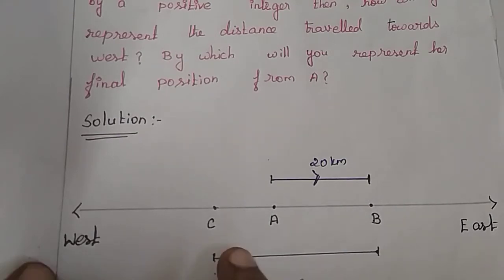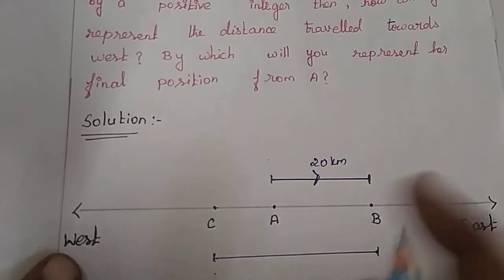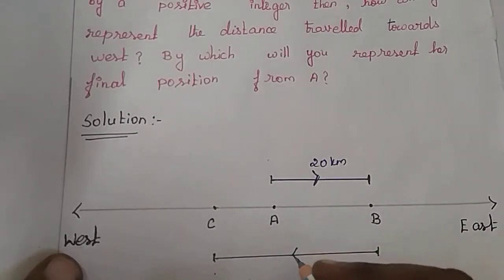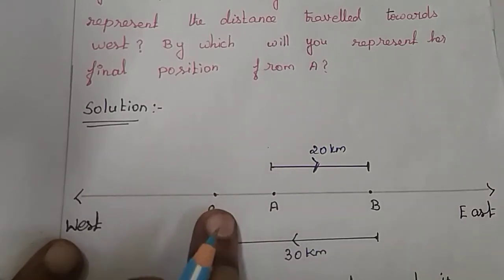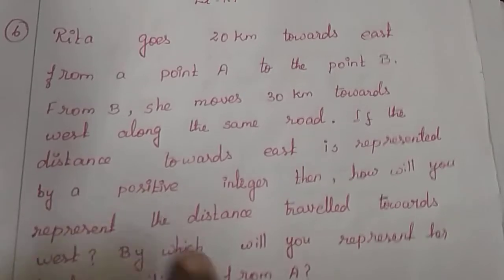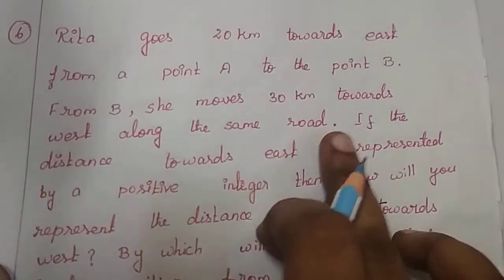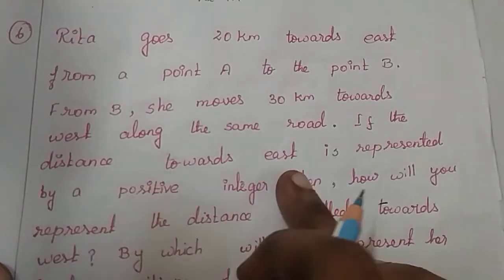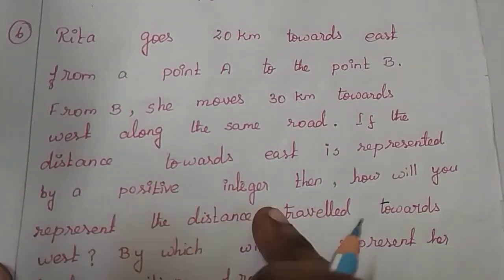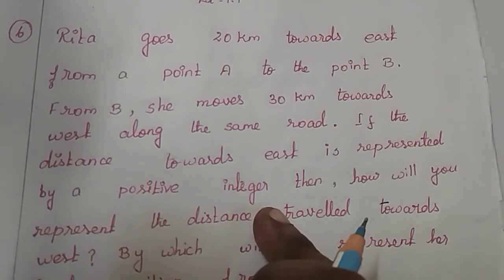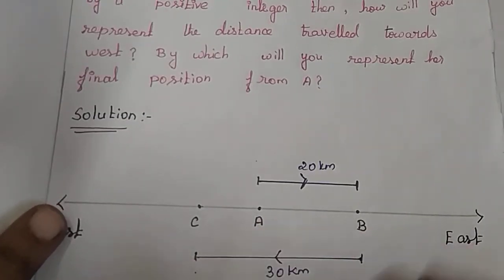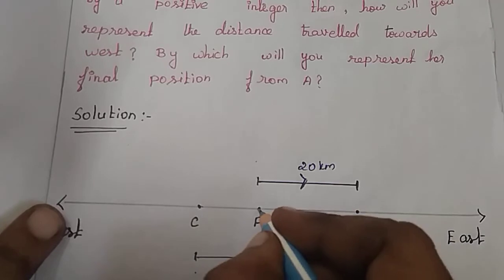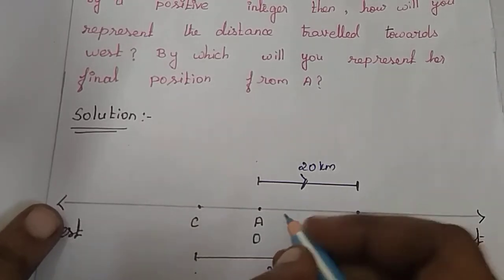She travels 30 kilometers west. The point C is the final point. If the distance towards east is represented by a positive integer — east is represented by a positive integer — this is our origin O.